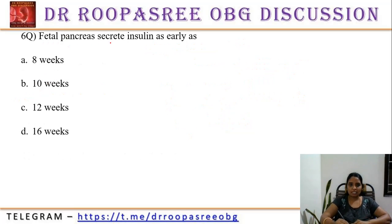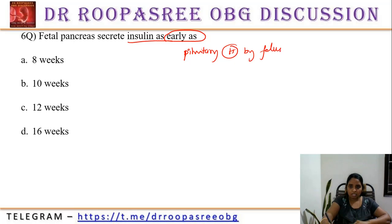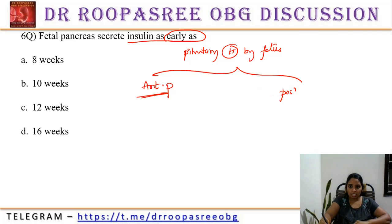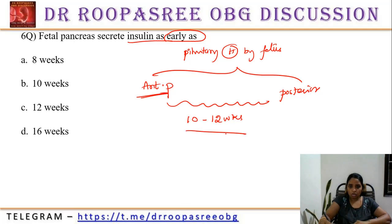Fetal pancreas secretes insulin as early as 12 weeks. Similarly, anterior pituitary and posterior pituitary hormones are produced as early as 10 to 12 weeks. Fetal insulin and pituitary hormones are produced as early as 12 weeks, so the best option is 12 weeks.